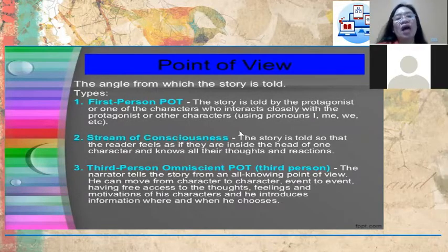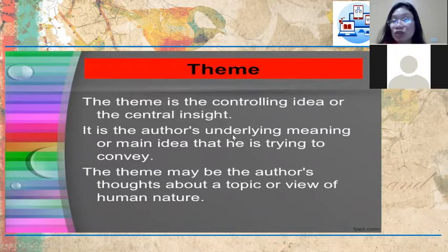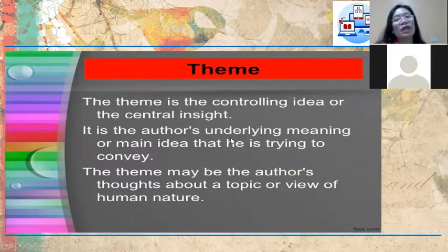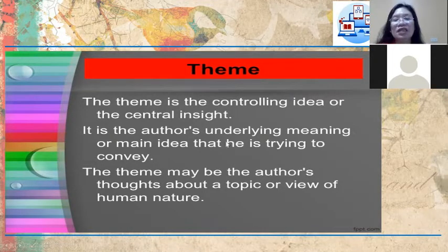These are how the story is told. Another element is theme. Fiction should have a theme. The theme is the controlling idea or central insight of the story — the author's underlying meaning or main idea that he is trying to convey. The theme may be the author's thoughts about the topic or view of human nature. Is it a love story, horror, adventure, family, or about life?